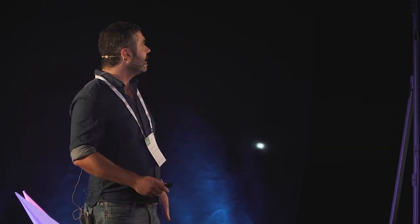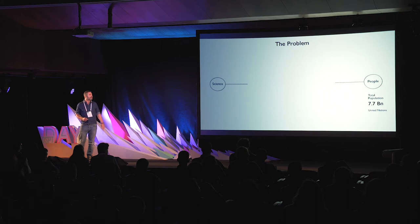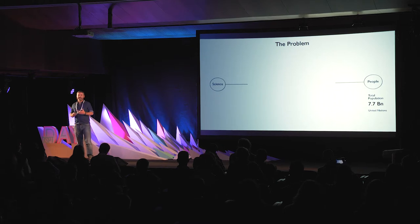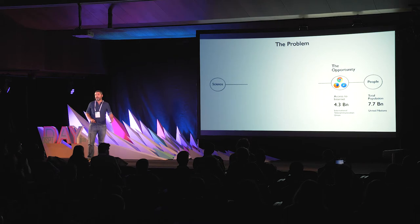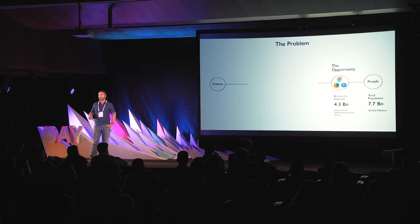So let's dive straight into the program. The problem is the following: we have science on one side and we have 7 billion people on the other one. What is really important on this topic is trying to communicate what science is doing to everyone, because climate change is the sort of thing which definitely exists in our environment and our planet. There is a problem, but there is also an opportunity — the massive access to internet that we have right now in the world.